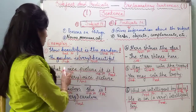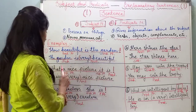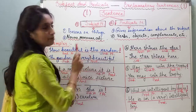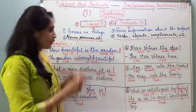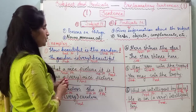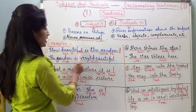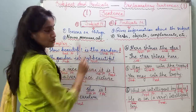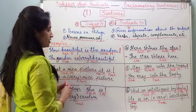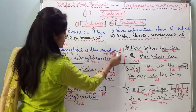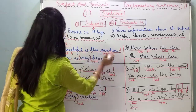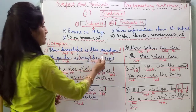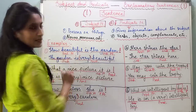Now you can easily identify the subject and predicate. 'The garden' is the subject and 'is beautiful' is the predicate. So in the original sentence 'How beautiful is the garden!', the subject part is 'the garden' and the predicate part is 'how beautiful.'